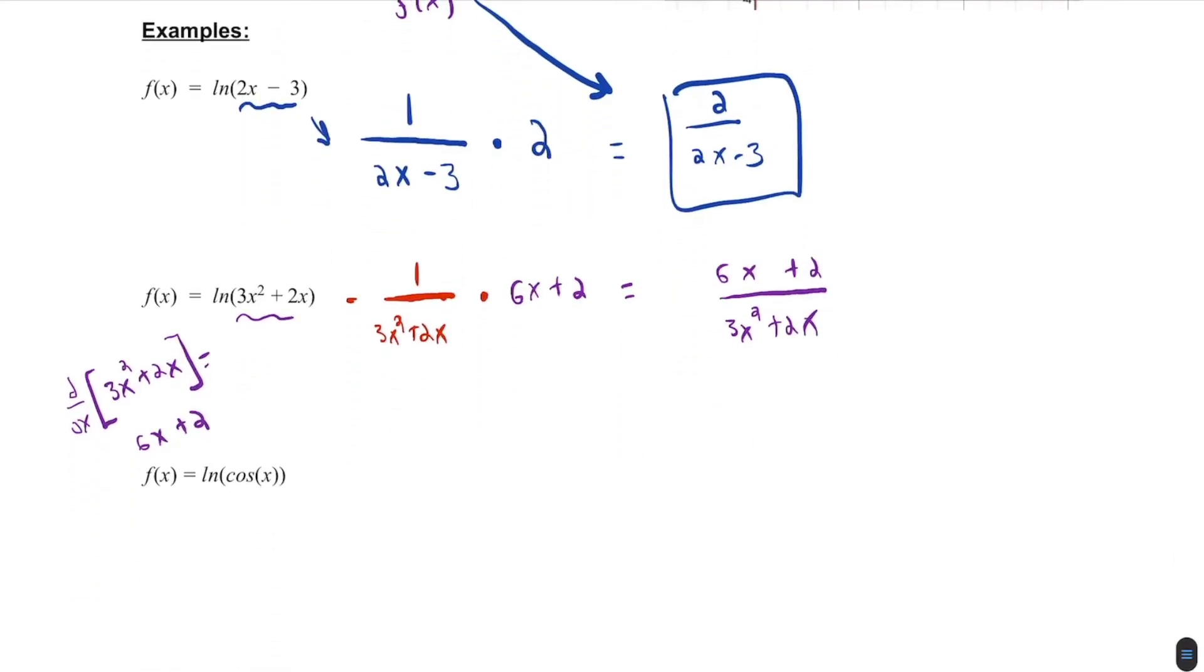All right. And finally, the natural log of cosine of x. This is a fun one because, first, the derivative here. Sorry, I always forget to do this. f prime of x was what I was doing in my head. f prime of x. f prime of x. Just finding the derivatives here. So we would have 1 over cosine of x, chain rule, times negative sine of x. And so we put that together, we'd have negative sine of x over cosine of x. Or negative tangent of x.